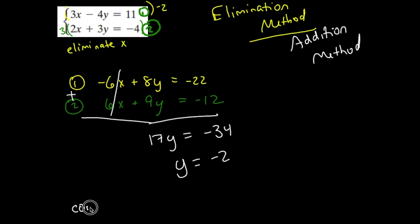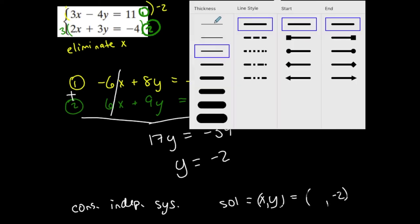So this is a consistent, independent system that has one solution, which is an x and y point. And I do not know the x coordinate, but I do know y is negative 2. But not a problem, because once I know y, x is easy to find.